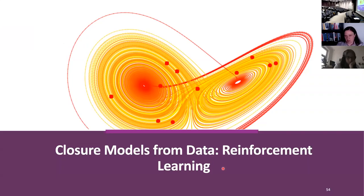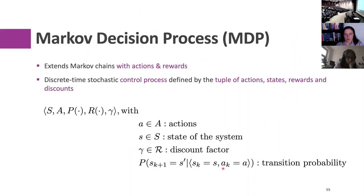I'll give you the 10,000-foot overview. I'm a numericist, not a machine learning expert, so this might be rough around the edges. First, we need to define a Markov decision process — a fancy term for a control process defined by a state you are in, an action you take in that state, which transitions you to a new state. It's essentially a system where sequential actions move the system along to a next state.